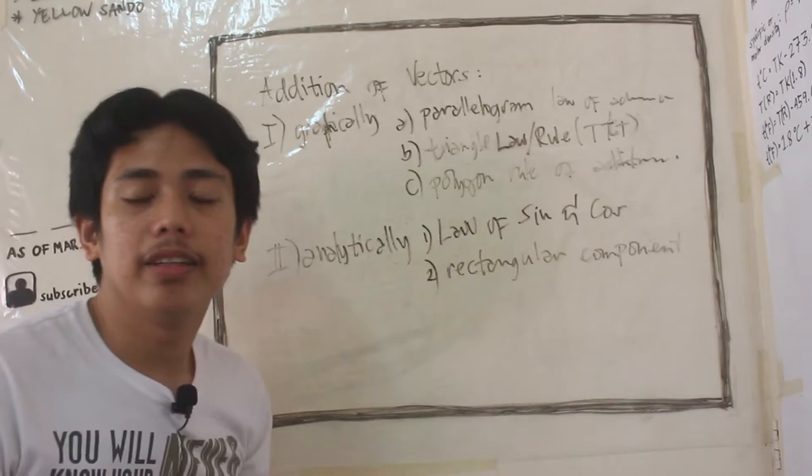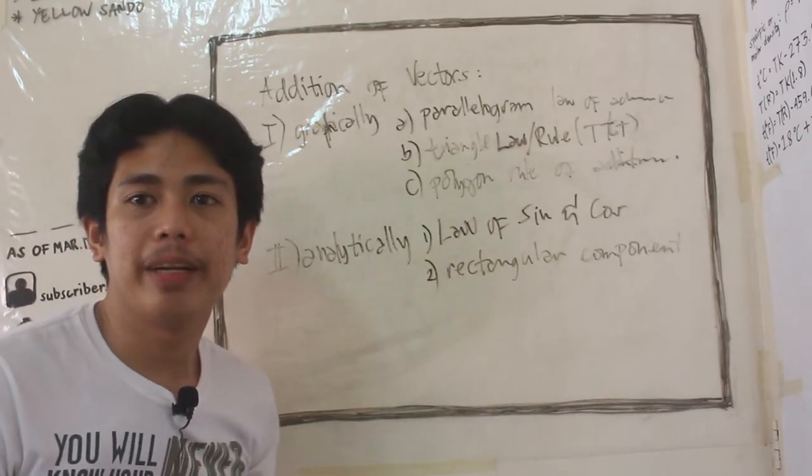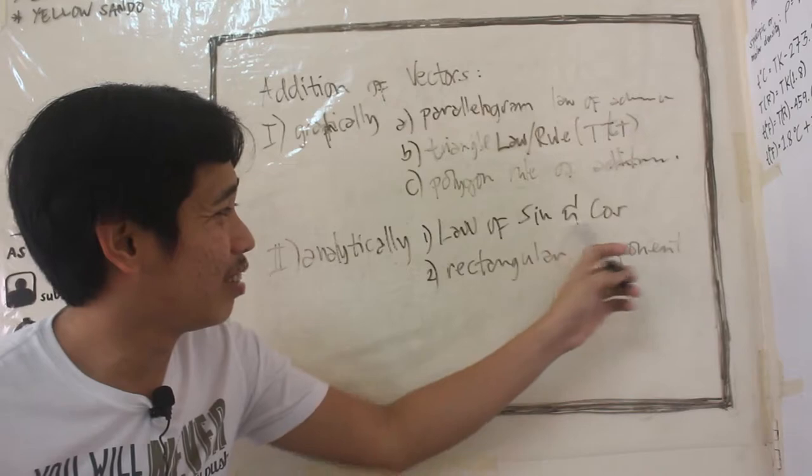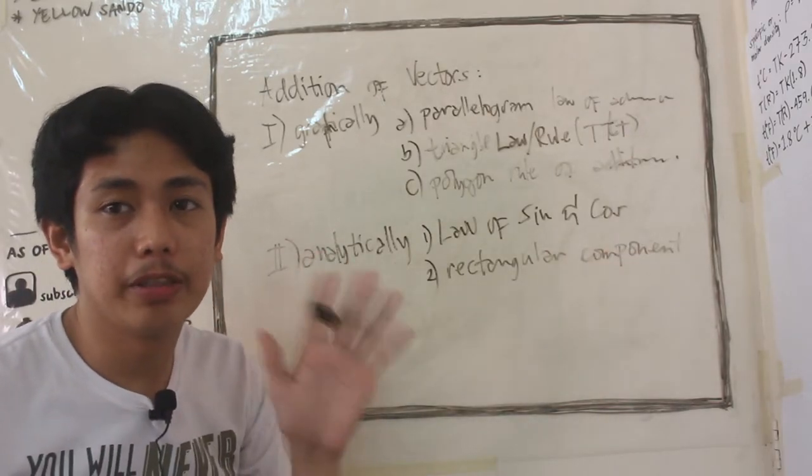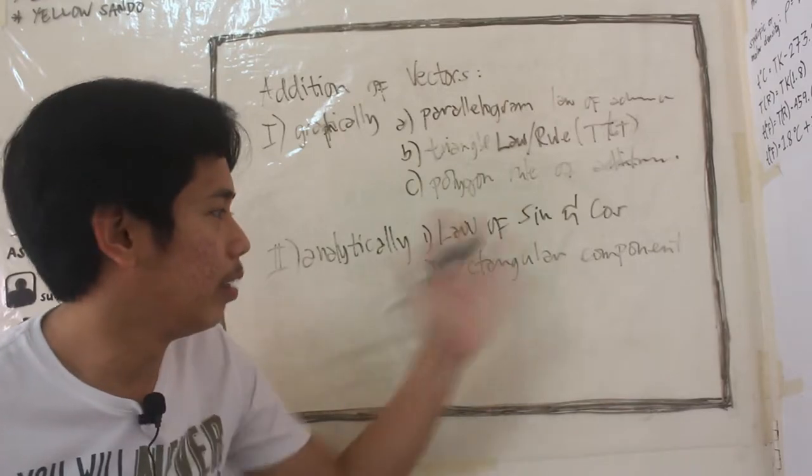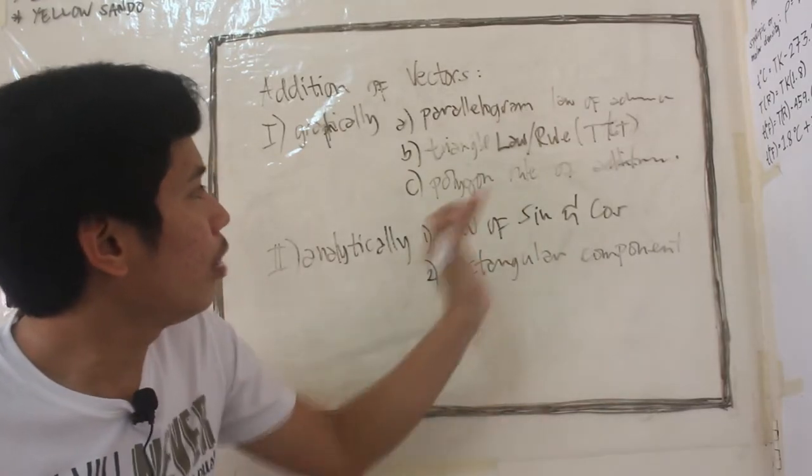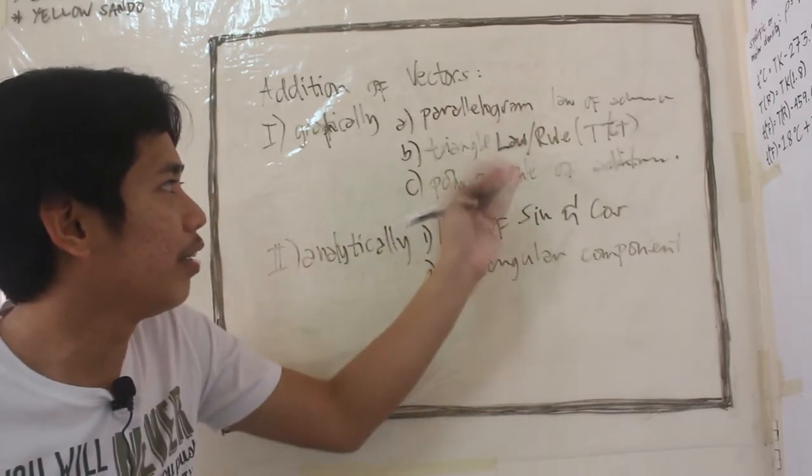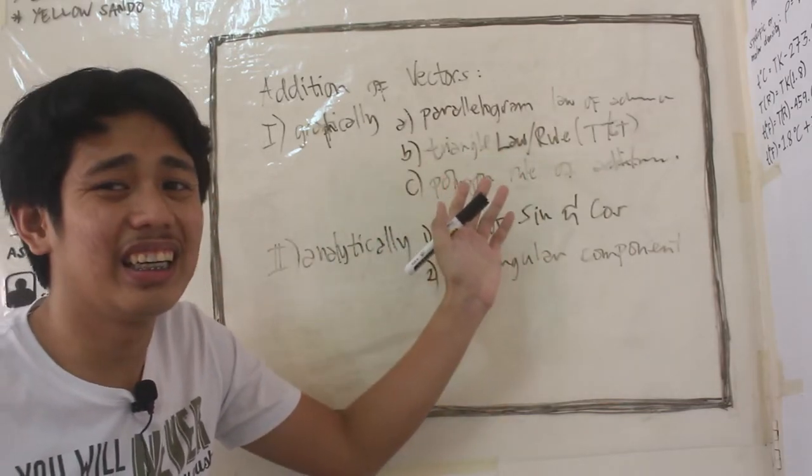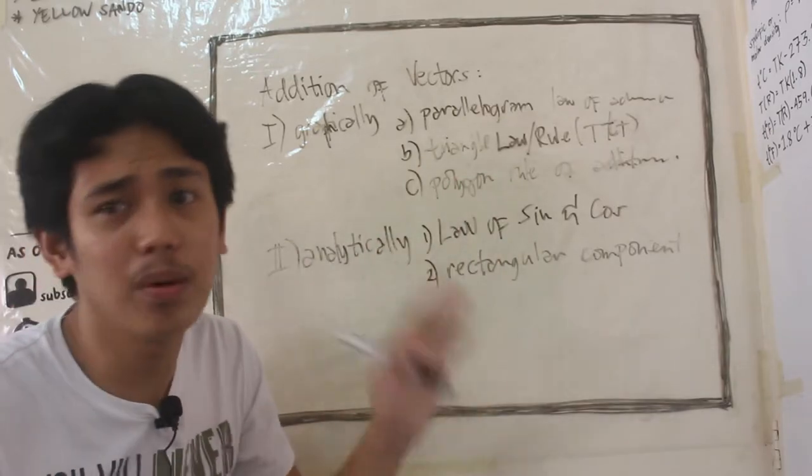Kung nakatake na kayo ng pre-calculus, tapos natin natin to. Law of sines and cosines. Kung medyo magaling kayo sa triangle, alam nyo na to. Yung polygon rule of addition, medyo same lang siya sa triangle law. Yun nga lang, hindi lang siya tatlong sides, polygon siya.